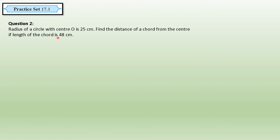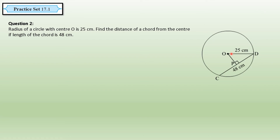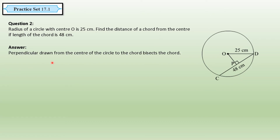Question 2 of practice set 17.1: the radius of a circle with center O is 25 centimeters. Find the distance of the chord from the center if the length of the chord is 48 centimeters. The chord length is 48 centimeters and we have to find the distance of the chord from the center, meaning we need to find the length of OP.